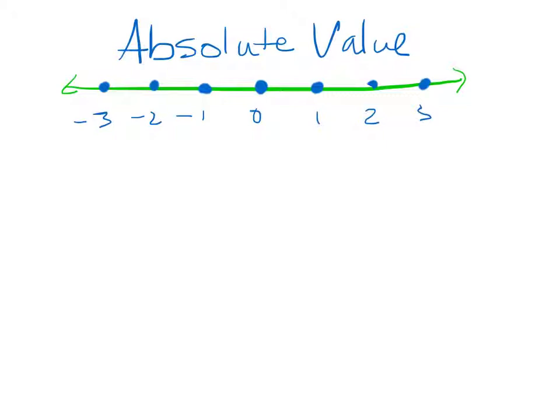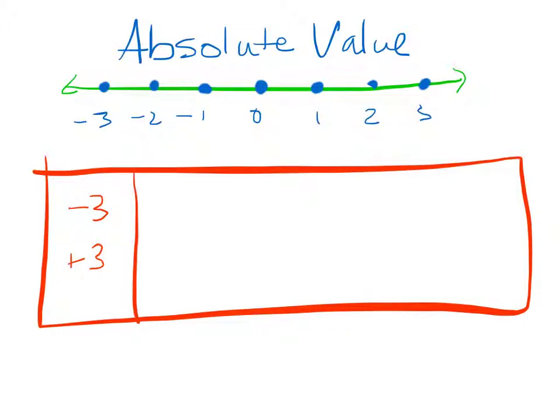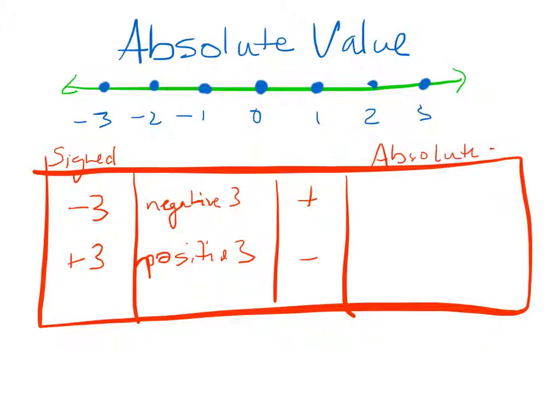What is the absolute value of a number? Let's take a look first at negative 3 over here and a positive 3. These are the signed numbers that we see. They've got their positive or their negative sign. We would say this is negative 3, this is positive 3. The sign is a positive and a negative. But the absolute value of these numbers is 3 and 3. They don't have any symbols in front of them. We just say 3. And the way that we determine that is we go back up the number line and we always say, how many jumps away from 0 is it? How far away from 0?